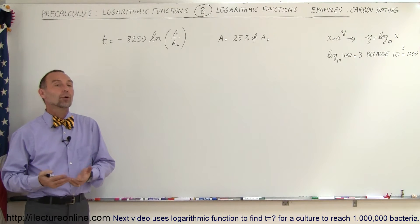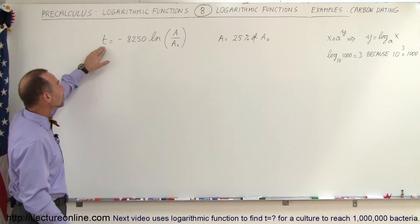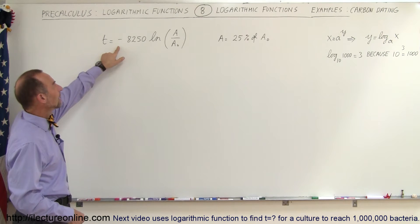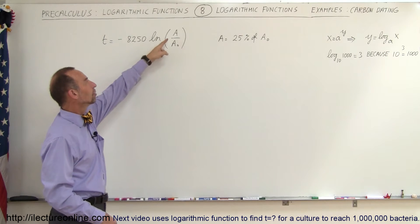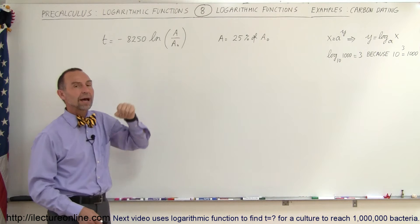the age of an artifact when the equation is given that the age, the time that has elapsed, is equal to minus 8,250 times the natural log of the amount that you currently have left over divided by the original amount.